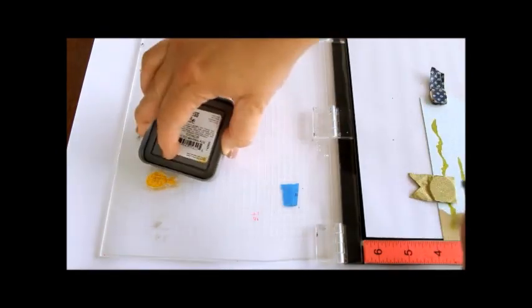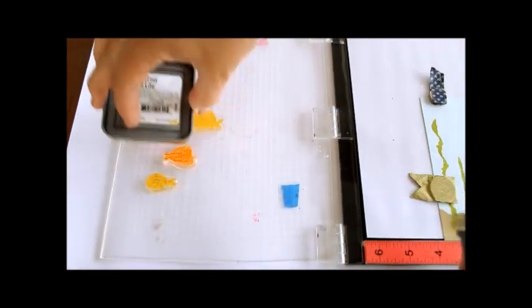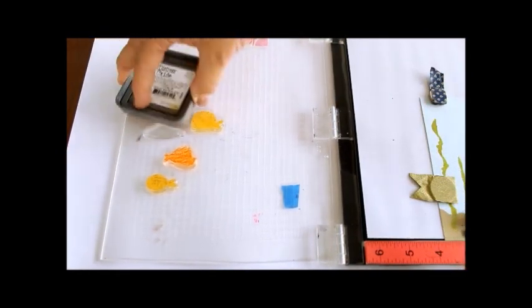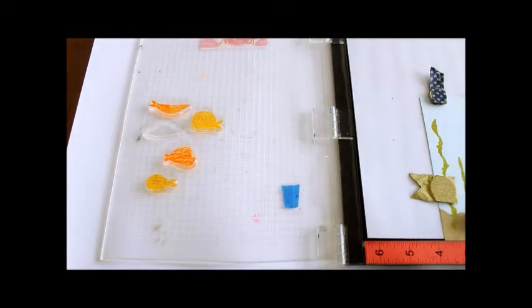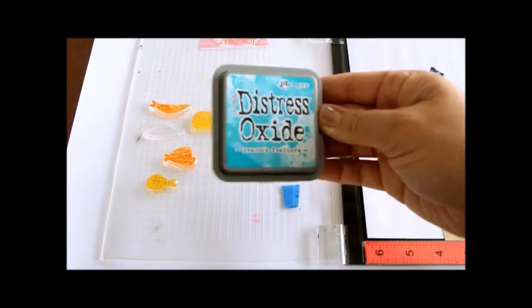I'm applying ink to the stamps now. Fossilized Amber and Spice Marmalade then Peacock Feathers. This is the first layer. I'll add other colours on top in a minute.